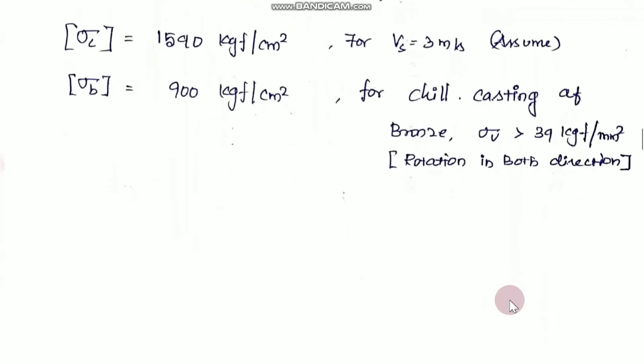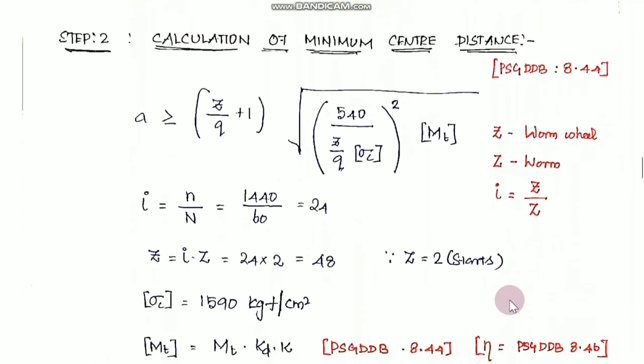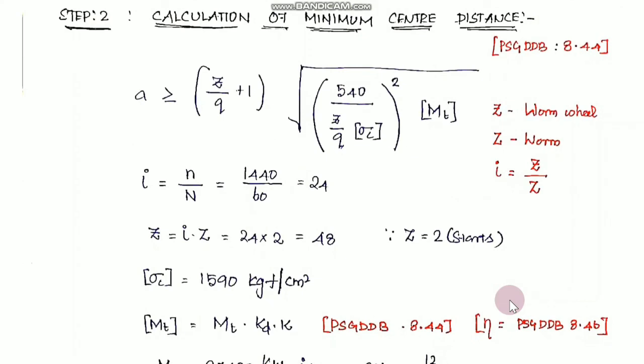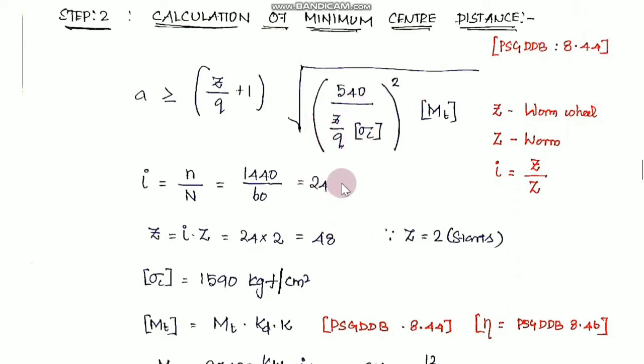Step number 2 is the calculation of minimum center distance. The formula from page 8.44 is: A greater than or equal to (z/q + 1) multiplied by the cube root of (540 divided by zq into sigma c) whole squared, multiplied by MT. We select the worm gear using the formula pages 8.44 to 8.46. All the formulas and procedures are available. Now we clarify notation.